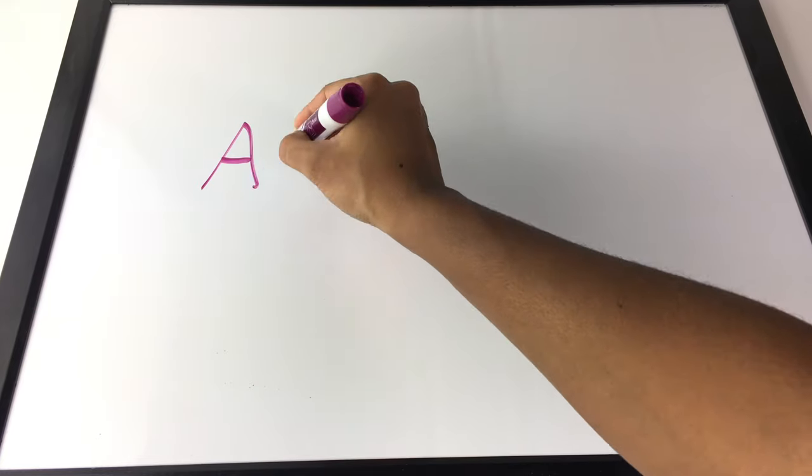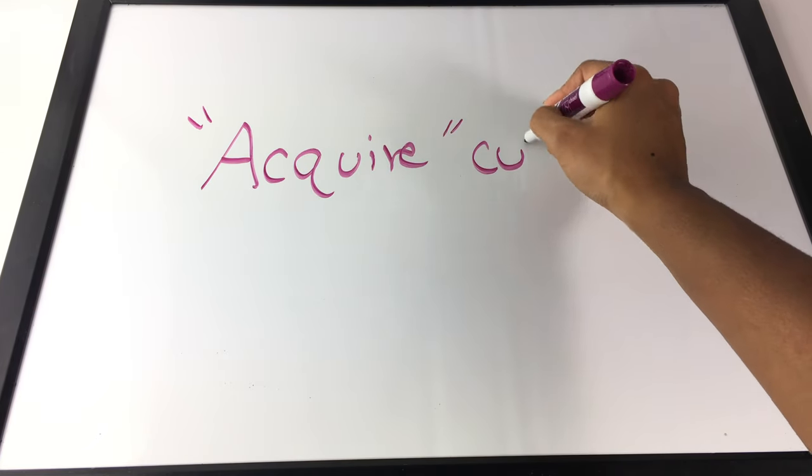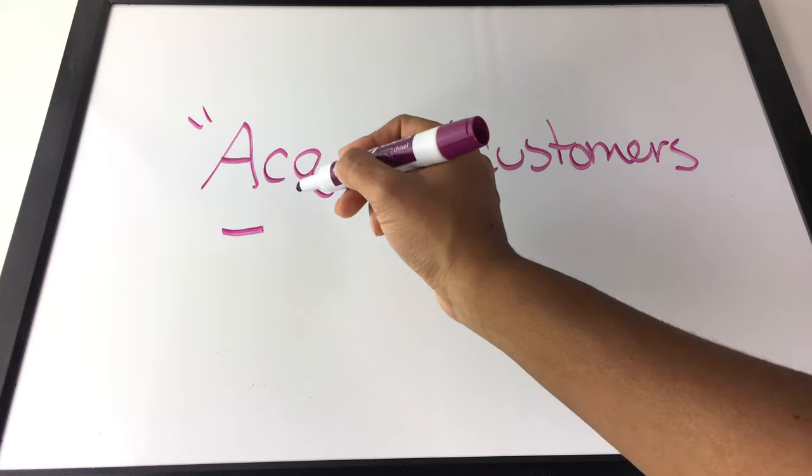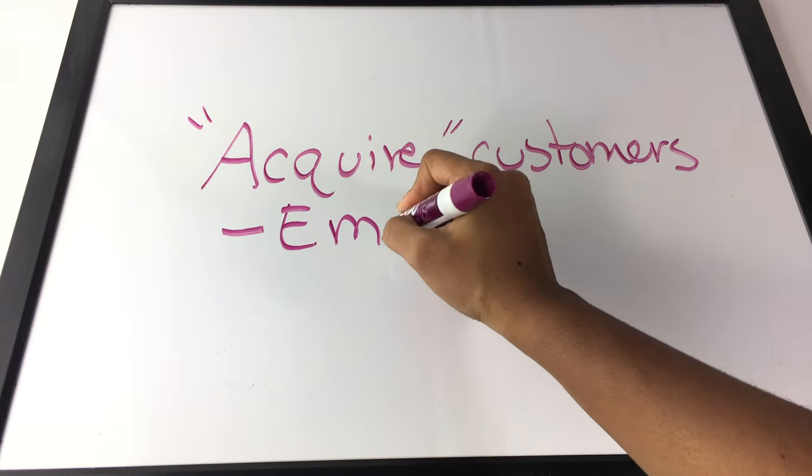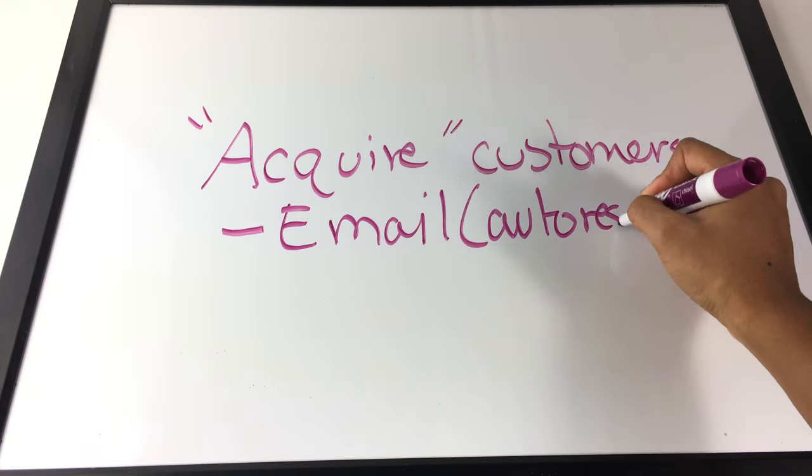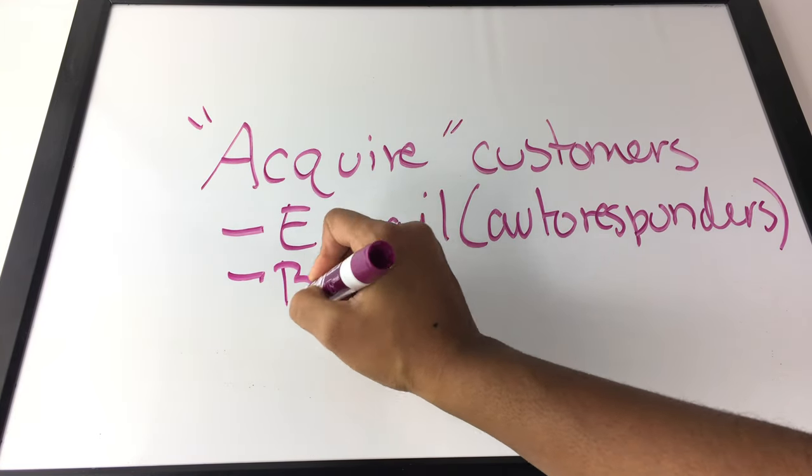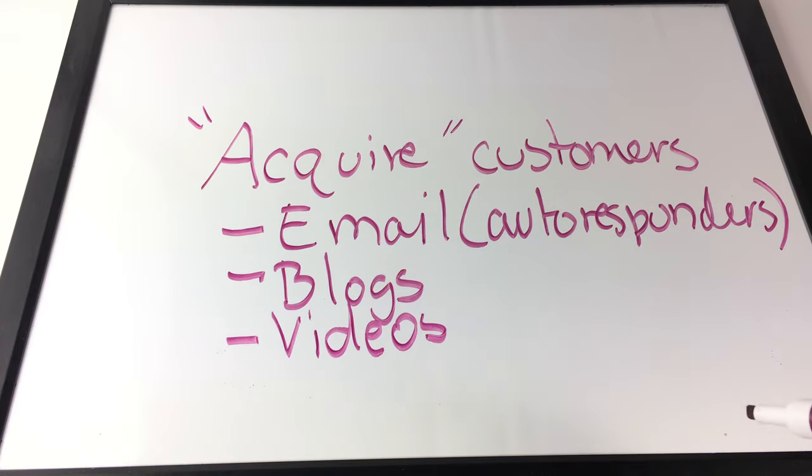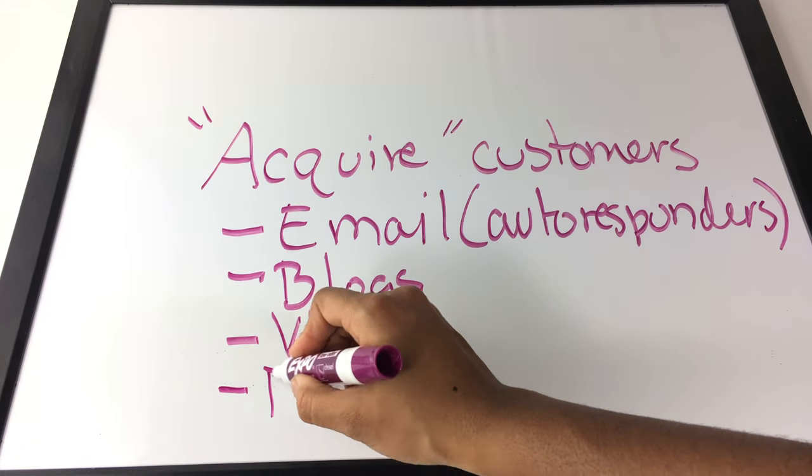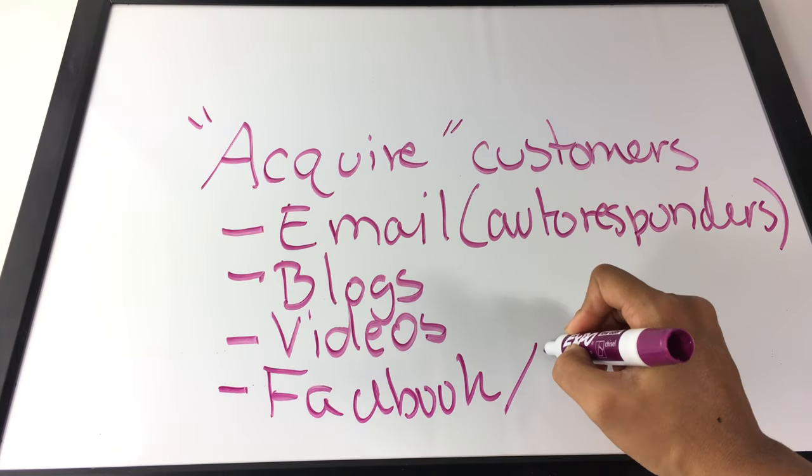In this type of process, you can acquire customers through email marketing, such as AWeber, where you can create your own autoresponder. Next is blogging and videos, and also social media such as Facebook, Instagram, and Twitter.